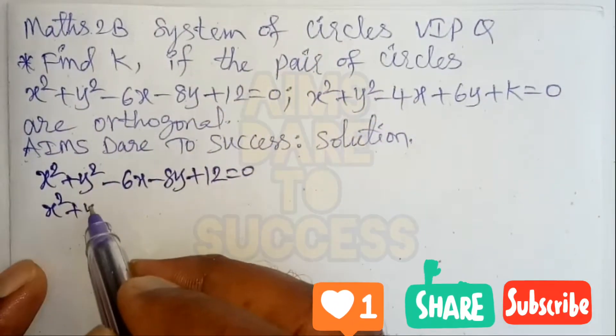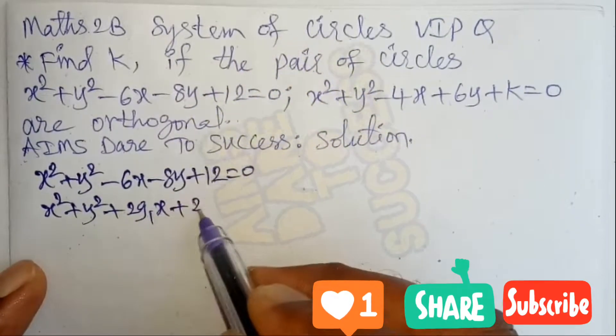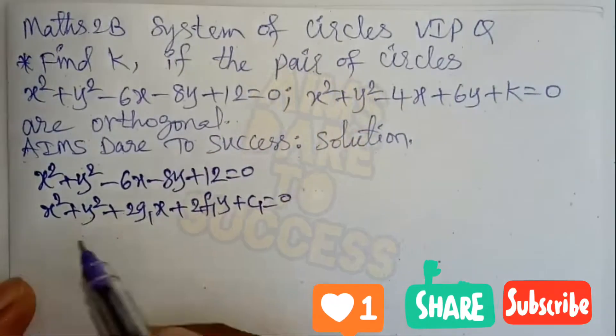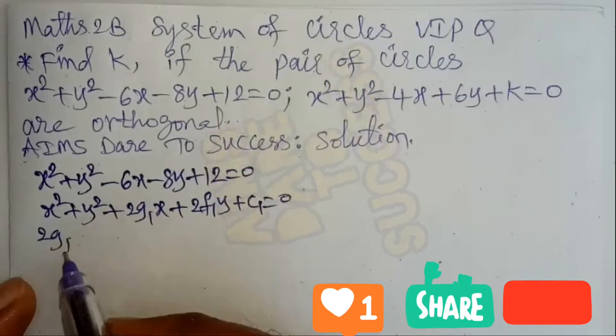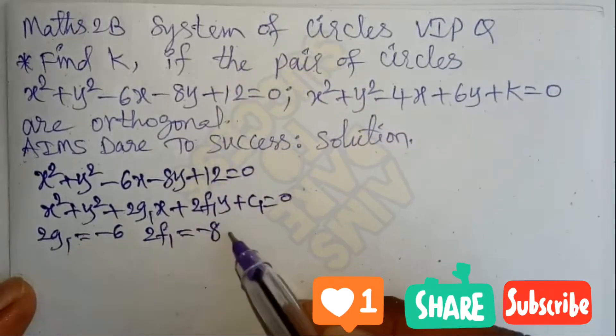...x² + y² + 2g₁x + 2f₁y + c₁ = 0. Comparing with x coefficients we get 2g₁ = -6. Comparing y coefficients, 2f₁ = -8. Comparing constant terms, c₁ = 12.